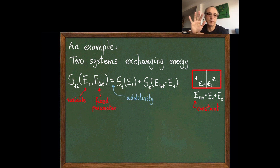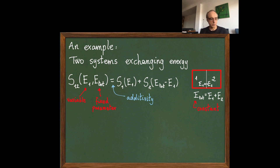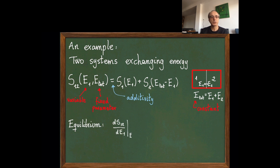I will assume that the entropy depends on the energy. The entropy of system one will depend on E1 and the entropy of system two will depend on E2. The only variable is E1; E_total is the fixed parameter. This is just an example of the assumptions we had on the previous blackboard. Now we can use the main property of entropy, which is that it is maximum at equilibrium.